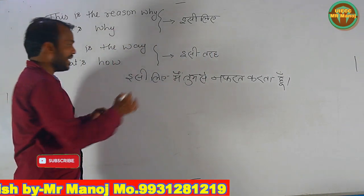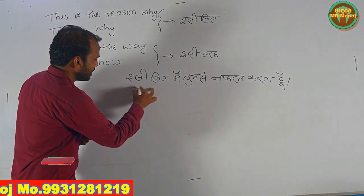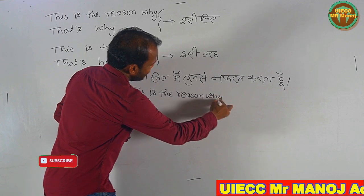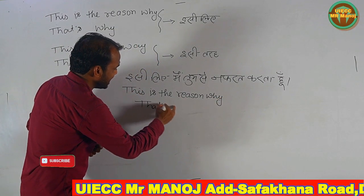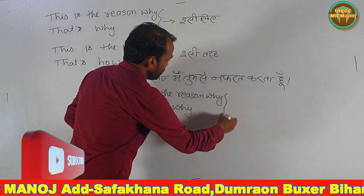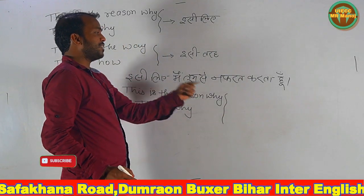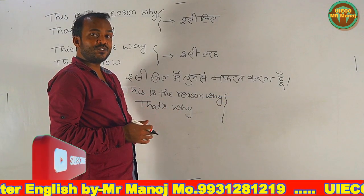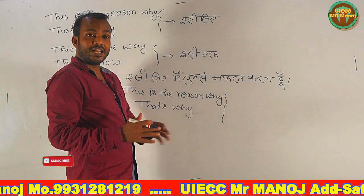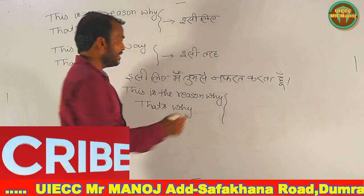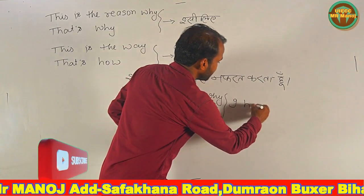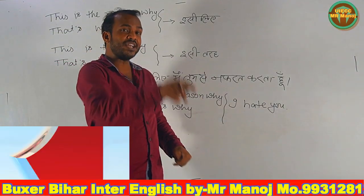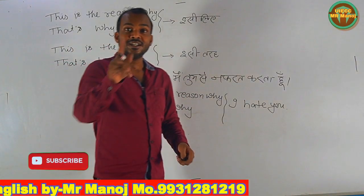So I have given you this expression. Now take it easy — you can say 'this is the reason why' or you can say 'that's why.' After using either of these, the rest of the sentence follows. For example: 'mai tumse nafrat karta hoon' becomes 'I hate you.' So you can say: 'This is the reason why I hate you' or 'That's why I hate you.'